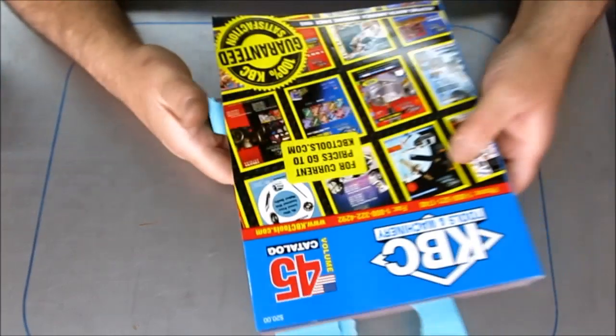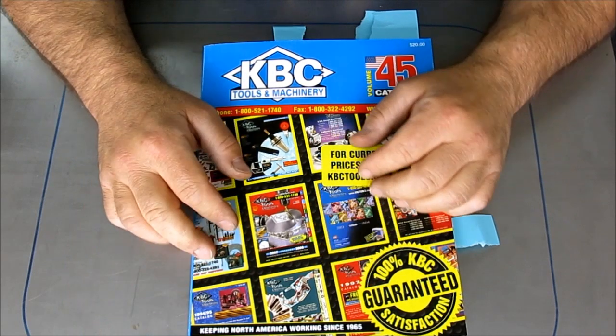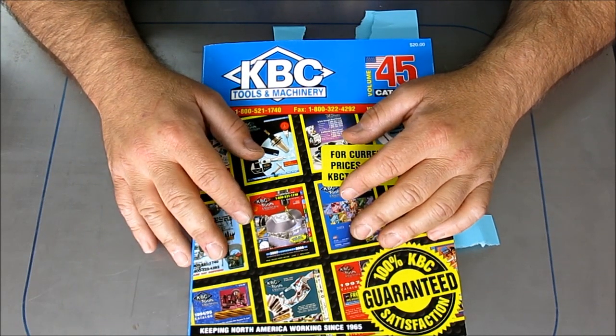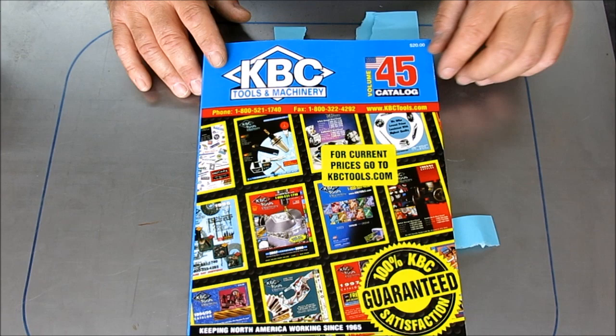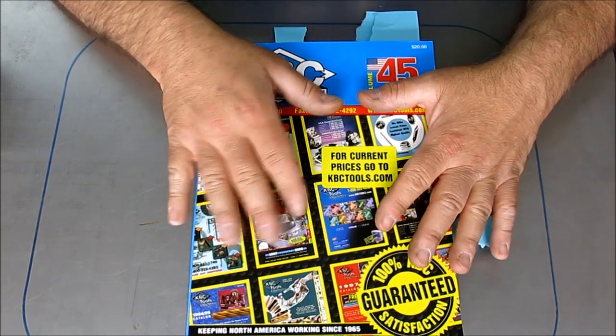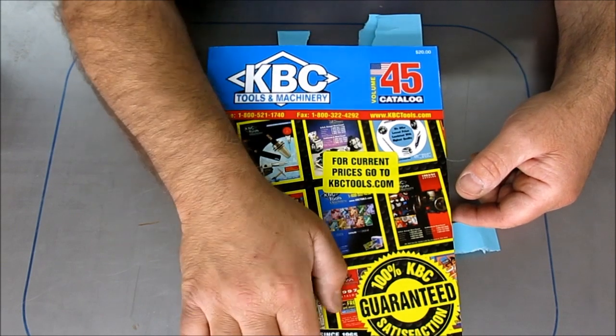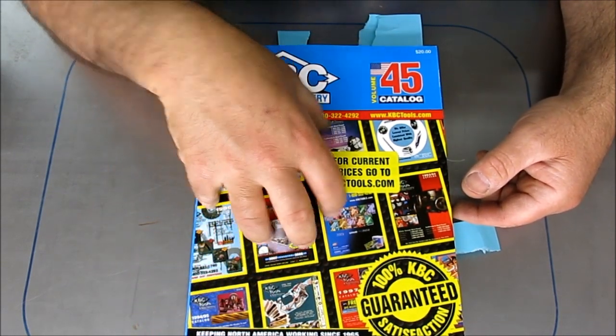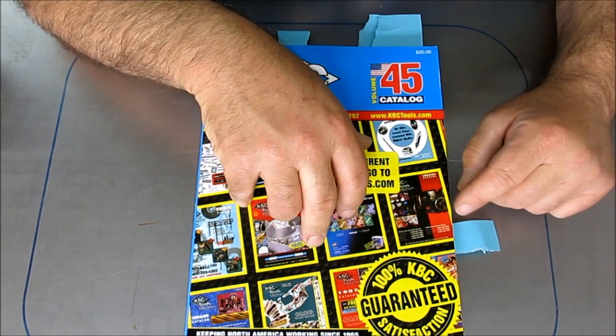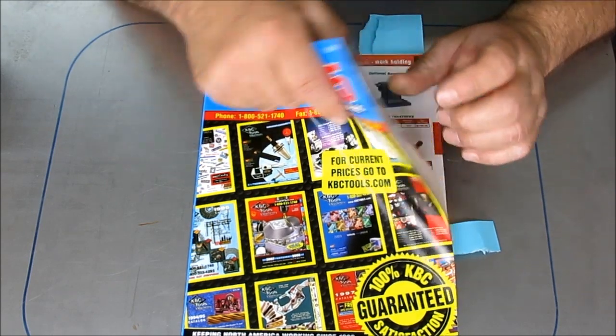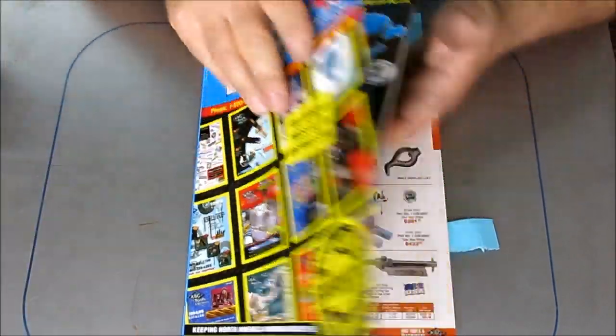The last thing we're going to look at here is I recently got this KBC catalog. They're a tool supplier, like Travers and Enco and MSC and those guys. They recently had their 50th anniversary or something like that. Anyway, I requested a catalog and I got a couple of catalogs and you can see I got some flags on here. We're going to look at a couple of things in here. I guess they're based out of Canada but they have branches in the U.S. So yes, they'll ship to Canada. Let's look at a couple of interesting things that I thought you guys would get a kick out of.